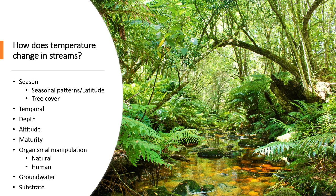Altitude matters just as latitude does. Maturity also matters — whether it's an old or brand new stream. Old streams have more plants around them, which changes how the stream warms and cools. Temperature is also changed by organisms — non-humans can modify streams through natural variation, and humans modify temperatures through things like dams, which create large open areas for sunlight to warm, and through power plant effluent that expels warm water into streams.